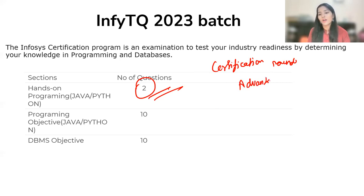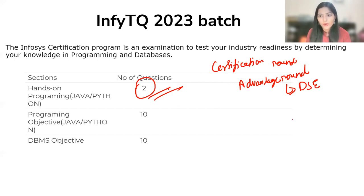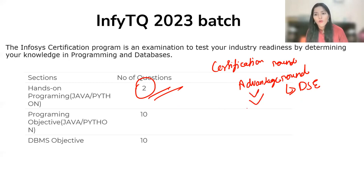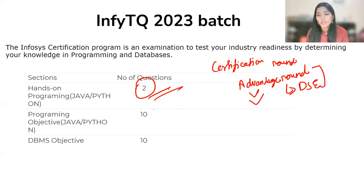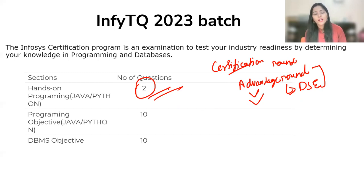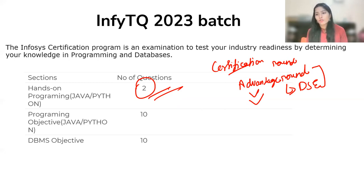If you do well in the certification part, you'll get an opportunity for the Advantage Round as well. From the Advantage Round you can get the opportunity for TST and Power Programmer profiles, which have better packages. In the Advantage Round, coding questions will be of a higher level requiring optimization. But focusing on the certification round - from going through previous papers, the questions are easy to medium.